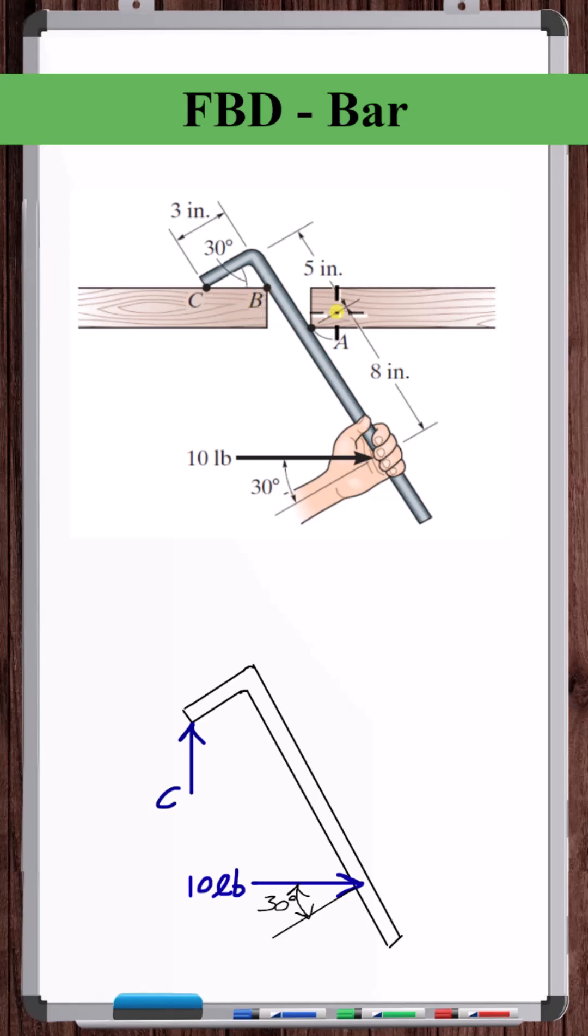And the forces at point B and A will be perpendicular to the axis of the handle, so along this direction. The force at point B is pushing this way. The force at point A is pushing this way. And like shown here, they're both acting at 30 degrees from the horizontal.